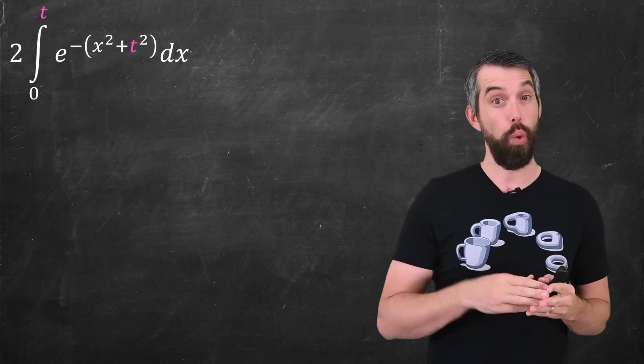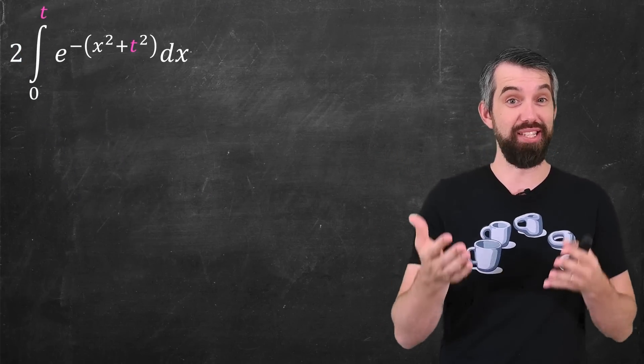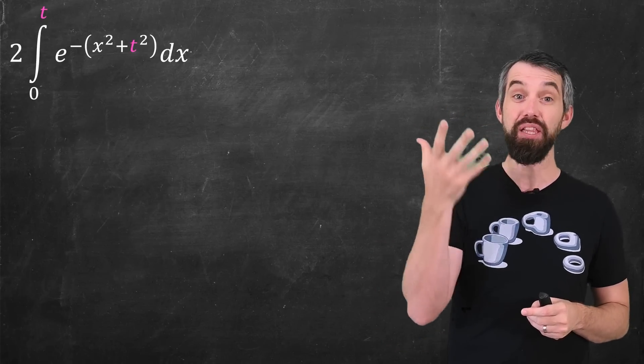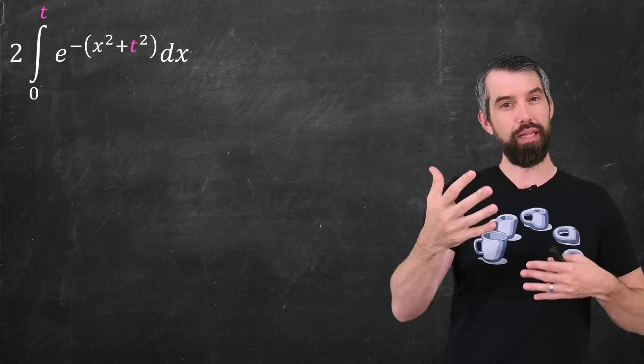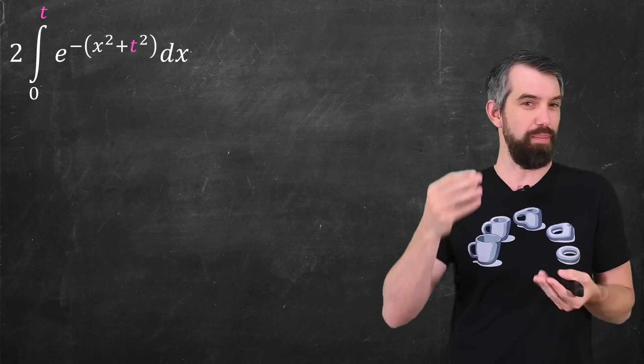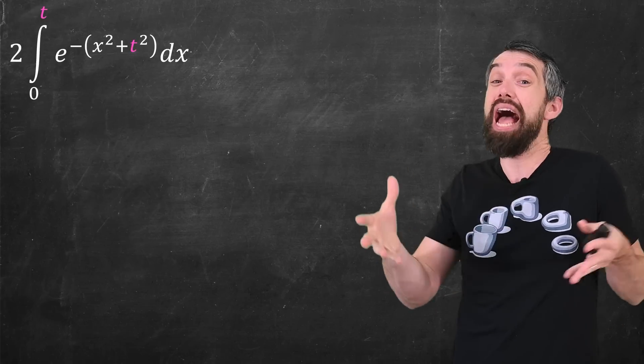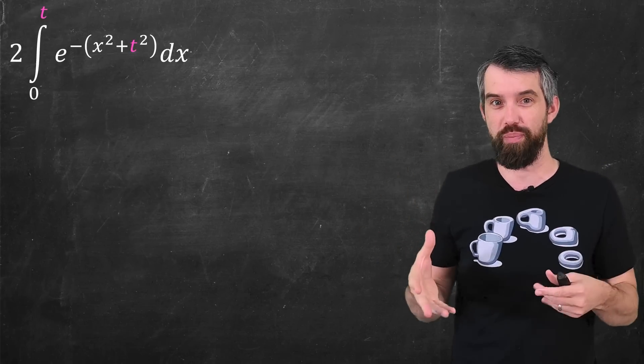Now when I look at this expression, one of the things that's challenging about it is precisely the thing that I introduced, that there's this variable t in the limit of integration. So let me do a change of variables to make my limits of integration just numbers again, and that'll put the t entirely in terms of the integrand, so it's all in one place.